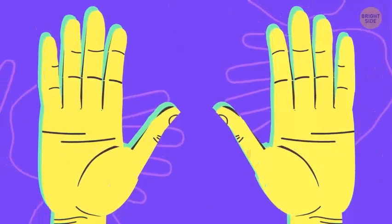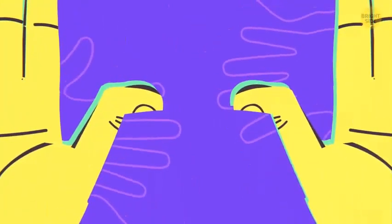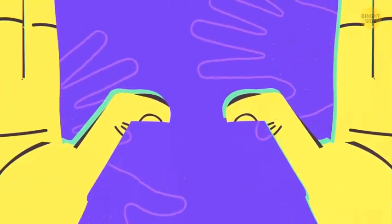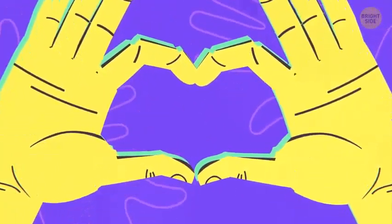People with double-jointed thumbs can bend them backward. It looks super unusual, and very few people can do it. Still, it's totally okay. Even though it looks painful, it actually doesn't hurt at all for someone with a double-jointed thumb.